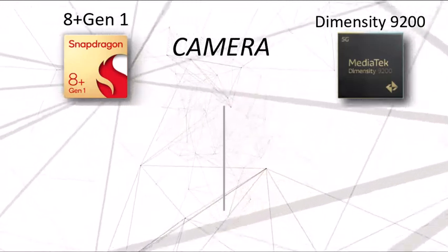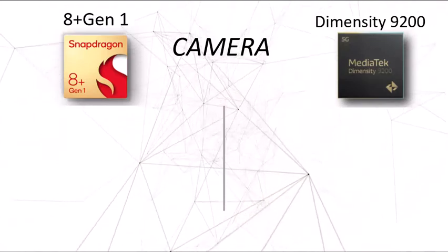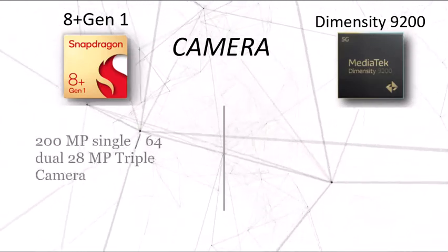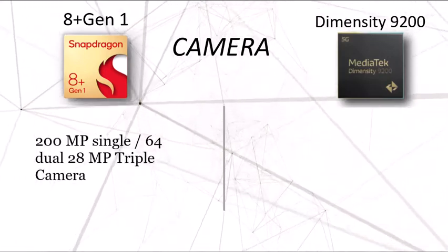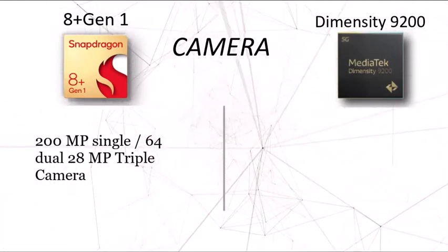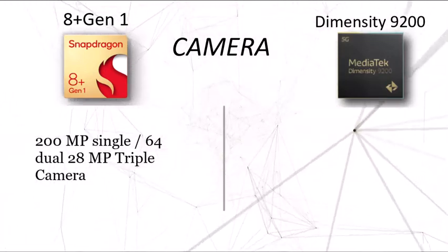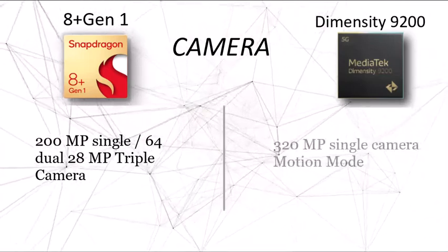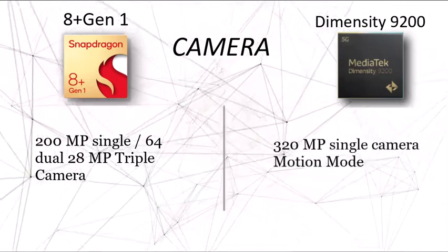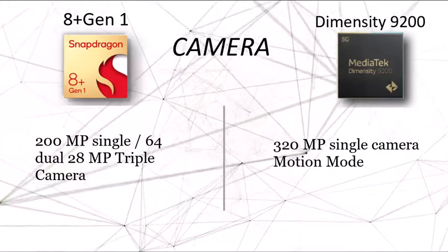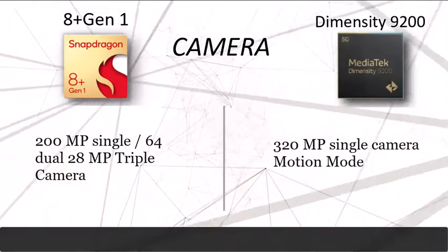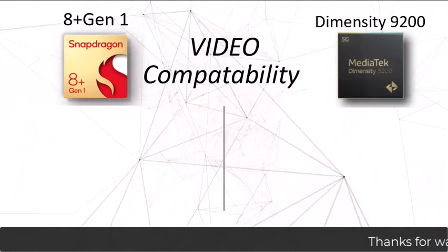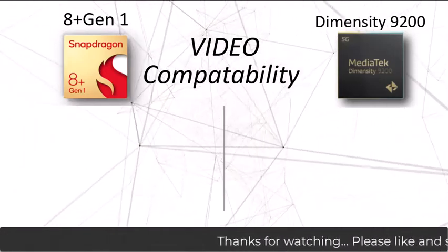For the camera department, the Snapdragon 8 Plus Gen 1 supports 200MP single shooter, 64MP dual camera, or 28MP triple camera. The MediaTek Dimensity 9200 supports a single camera of up to 320 megapixels maximum resolution. We haven't seen a 320 megapixel camera yet, but let's see what the future holds.